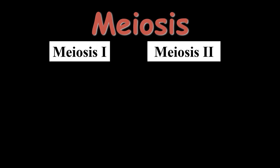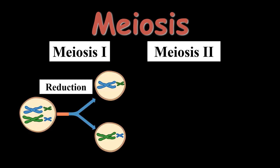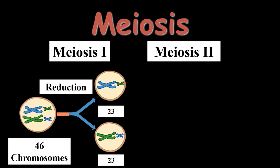To understand the complete mechanism of meiosis, it is divided into two stages: Meiosis 1 and Meiosis 2. Meiosis 1 is also known as the reduction phase, in which one parent cell gives rise to two daughter cells. It is called reduction because the number of chromosomes is reduced from 46 to 23. The parent cell contains 46 chromosomes, and each daughter cell will contain 23 chromosomes, which is half.